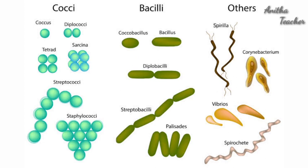The next type is Streptococcus, where many spherical bacteria are arranged in a chain. A large irregular group of spherical shaped bacteria is called Staphylococci. Sarcinae refers to eight spherical bacteria arranged in a cubical formation. That completes the spherical coccal forms. The second type of bacteria based on shape is elongated rods.